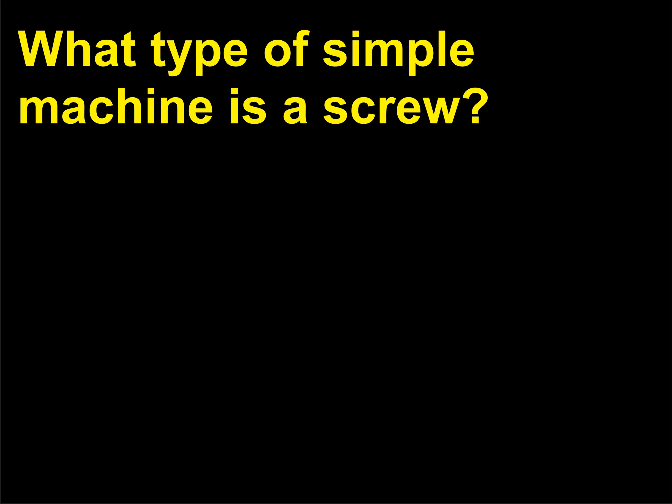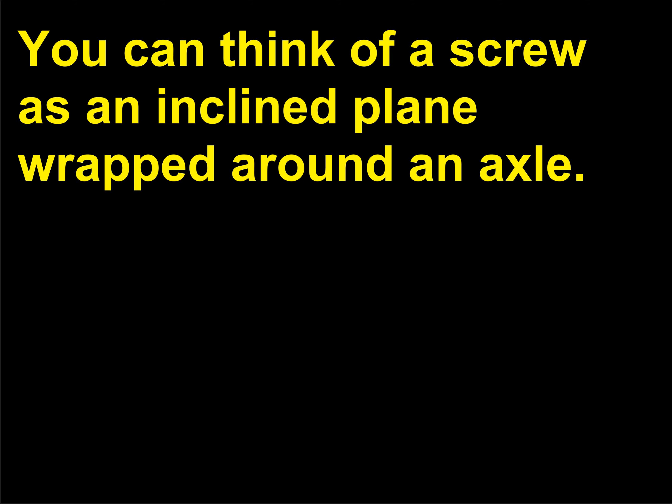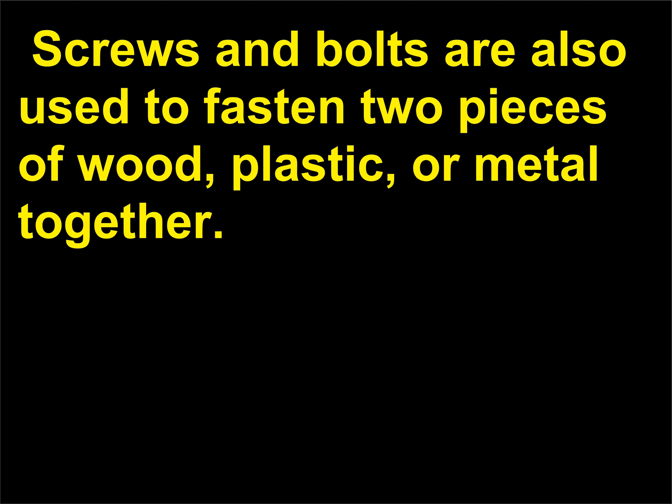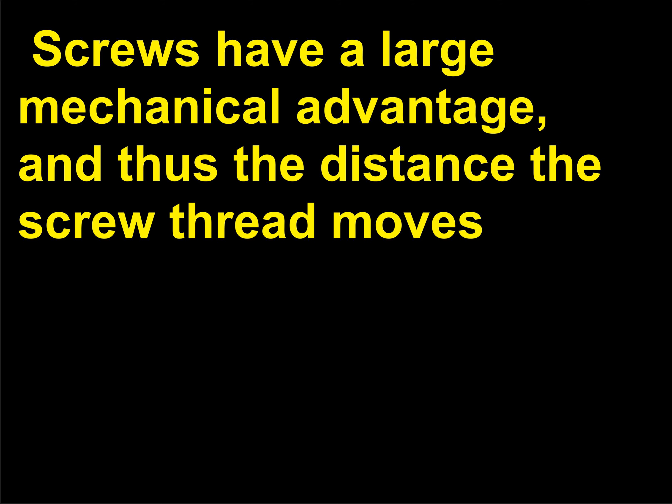What type of simple machine is a screw? You can think of a screw as an inclined plane wrapped around an axle. The ancient Greeks used a screw to lift water. Screws and bolts are also used to fasten two pieces of wood, plastic, or metal together. Screws have a large mechanical advantage, and thus the distance the screw thread moves in its circular motion is much larger than the distance the screw moves into the material.